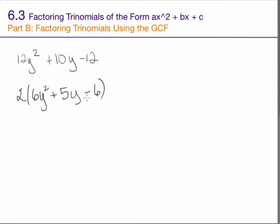The first step whenever you factor a trinomial should be to find the greatest common factor. Once you've found the greatest common factor, factor the remaining trinomial as normal.